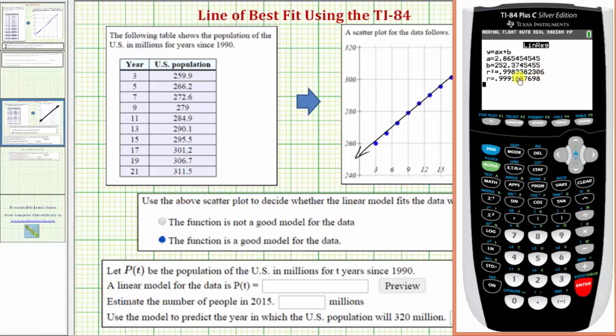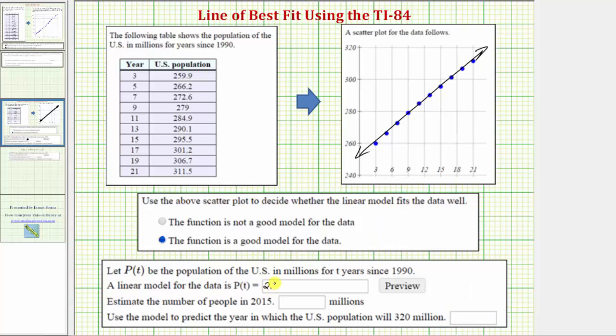The closer R squared is to one, the better the model. And because R squared is very close to one, our model is very good. Because R is close to one, this tells us we have a very strong positive linear correlation. Let's write down our model and round A and B to three decimal places. So the slope A will be approximately 2.865, and B is approximately 252.375. So P(T) = 2.865T plus 252.375.